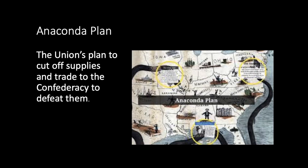Then we have the Anaconda Plan. We talked about the blockade, and basically the Anaconda Plan is a large blockade swooping in and crippling the South that the Union used. It's the Union's plan to cut off supplies and trade to the Confederacy to defeat them. They wanted to close off all the ports and entries to the South, such as the Mississippi River, suffocating the South much like an anaconda squeezes its prey — and that plan ends up winning the North the Civil War.